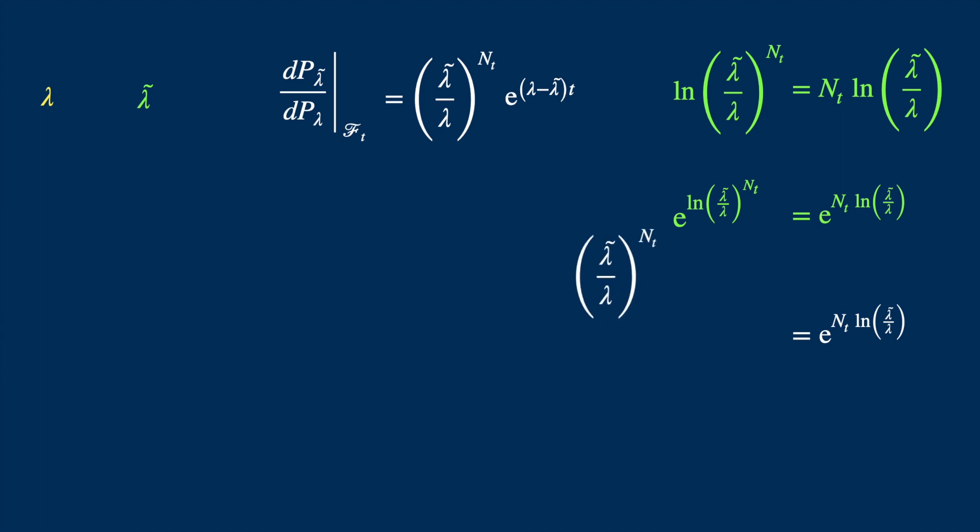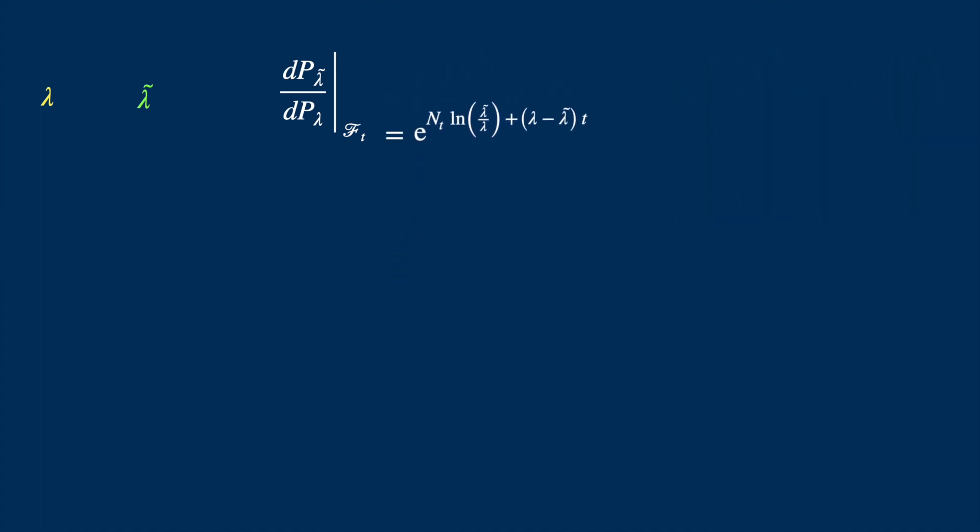Now we can make the substitution and bring down the exponential term as it is. Now we can combine the two exponential terms. As you know, multiplying two exponential terms mean you just add the terms in the exponents. And this is the Radon-Nikodym derivative. But we are not there yet.